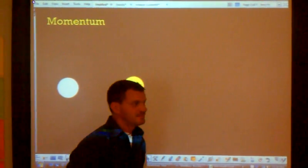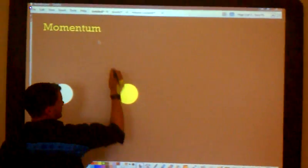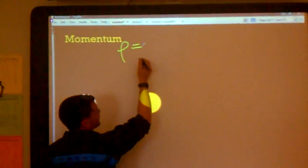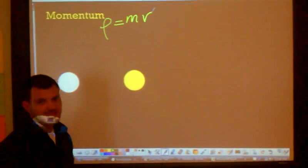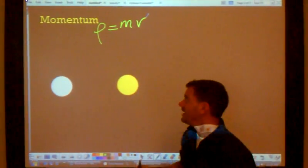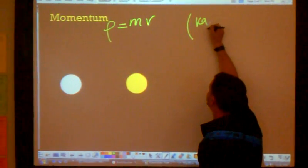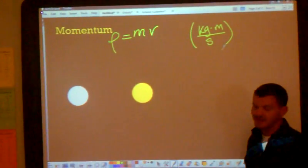This video is going to be about momentum. Momentum, the equation for momentum, it has a P, it's a P for momentum. That's equal to mass times velocity. I'm shaking a lot. Alright. The mass will be, the unit of this will be kilograms, meters, per second.